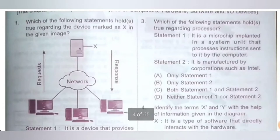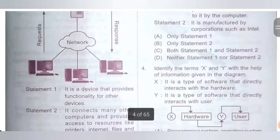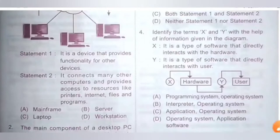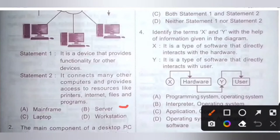Question 1: Which of the following statements hold true regarding the device marked as X in the given image? Statement 1: It is a device that provides functionality for other devices. Statement 2: It connects many other computers and provides access to resources like printers, internet, files and programs. Options: A. Mainframe, B. Server, C. Laptop, D. Workstation. The correct answer is Option B, Server. A server is a device that provides functionality for other devices and also connects many other computers and provides access to resources like printers, internet, files and programs.